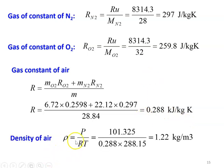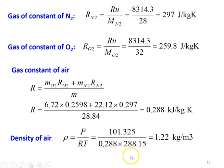Next, the density of air: rho equals pressure divided by R into T. R is the gas constant for air. So, 101.325 divided by 0.288 into 288.15 equals 1.22 kg per cubic meter. These are all the answers to example 1.